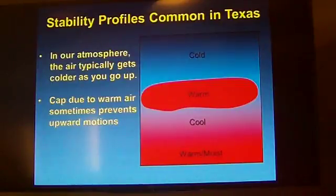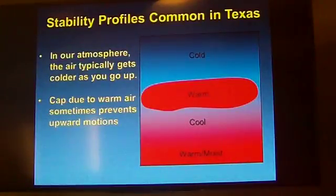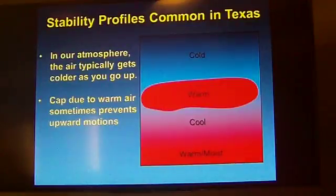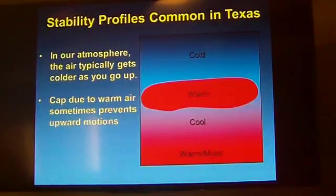Sometimes you'll hear the term CAP used. The CAP acts like a lid on the atmosphere. The parcel of air hits those warmer layers and now it is cooler than those warmer layers, so it stops rising and spreads out beneath the CAP. On days when you see clouds billowing up, reaching a level, and then flattening out to form a blanket, those are days where we typically have inversions or CAPs in the atmosphere.